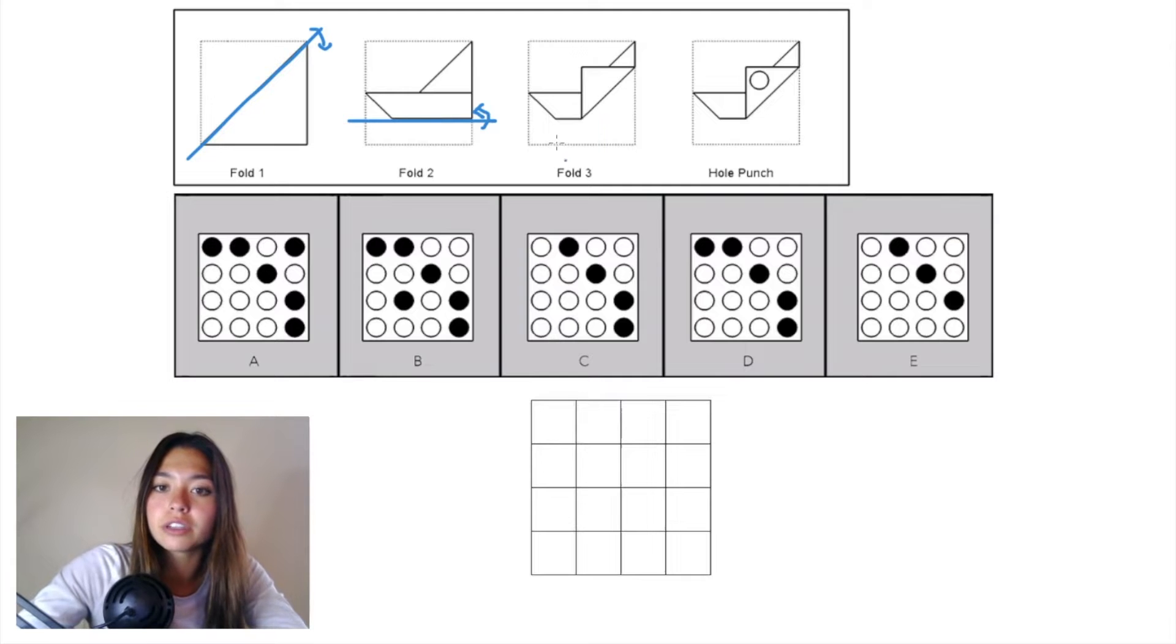In fold 3, we have another diagonal plane and we're folding up into this triangle. Then we have one hole punch.